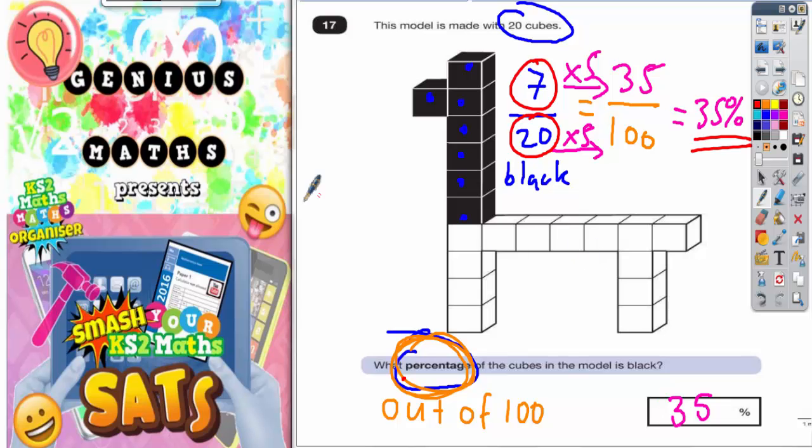If it was asking you for the white cubes, it would be 100 take away 35%, which would be 65%. That's how many white cubes there are, so 65% white, 35% black.